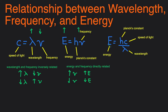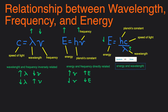Last equation: Energy equals Planck's constant times speed of light divided by wavelength. Planck's constant and speed of light are constants, so we can just ignore them. Now we're really just looking at wavelength and energy. So as wavelength goes up, energy will have to go down, because you're dividing by a larger number, which will make the quotient smaller. So that means energy and wavelength are inversely related.